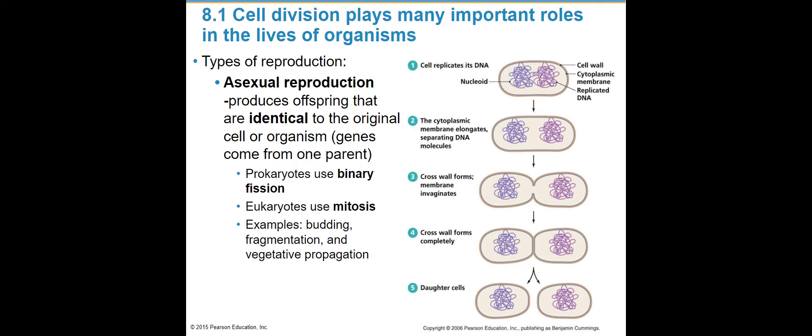Mitosis is one way that we can make exact copies. Asexual reproduction is going to have one parent create exactly identical offspring, and they are going to have the exact same genes as their parent. For example, in prokaryotes or cells that don't have organelles and a nucleus, things like bacteria, we have binary fission, which is really just a special form of mitosis.